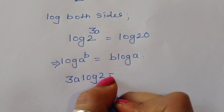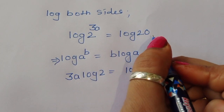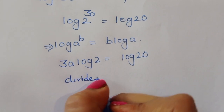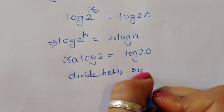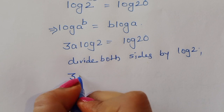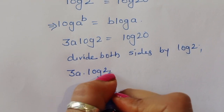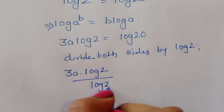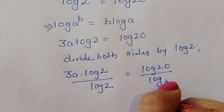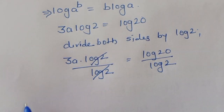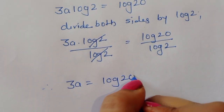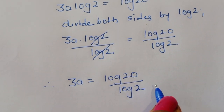Using this formula we get 3a times log of 2 is equal to log of 20. Now divide both sides by log 2. Then we get 3a times log of 2 divided by log of 2 is equal to log of 20 divided by log of 2. Log of 2 cancels, so we get 3a is equal to log of 20 divided by log of 2.